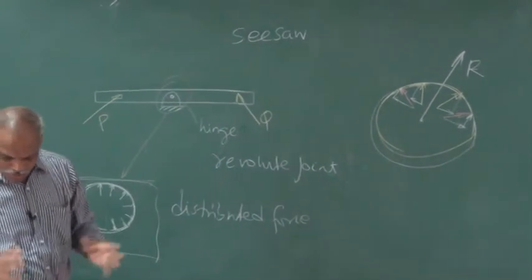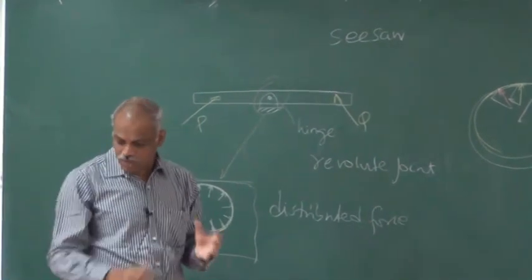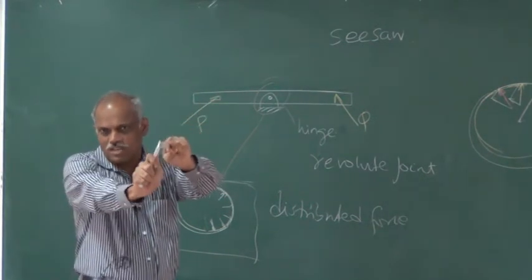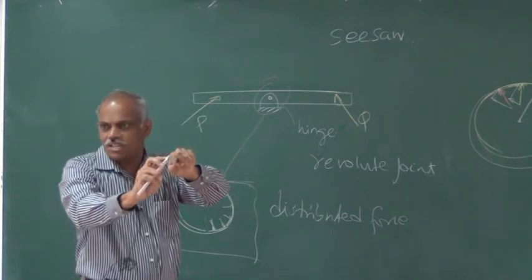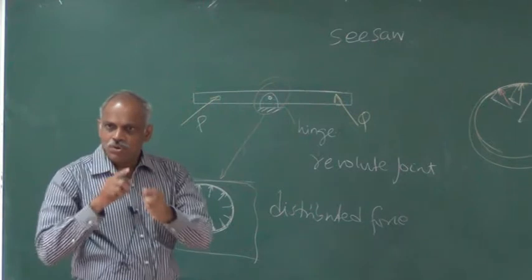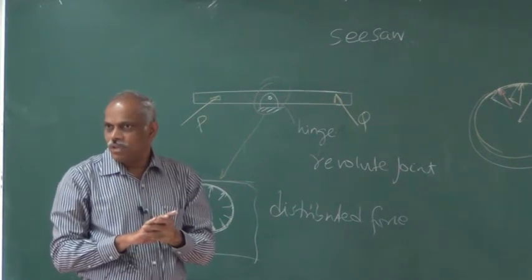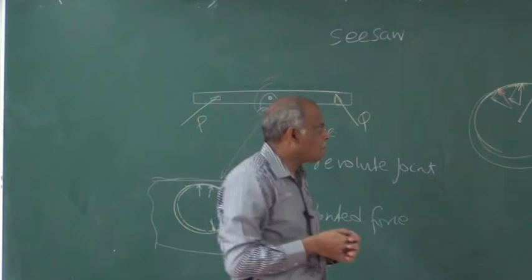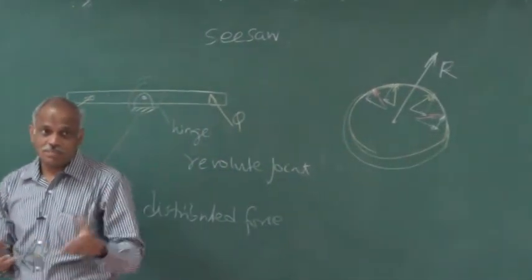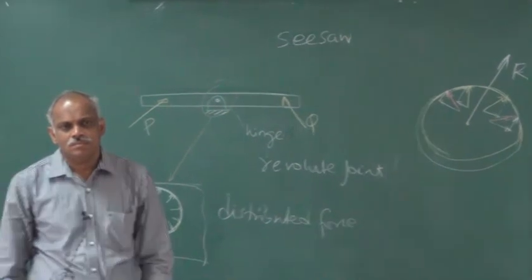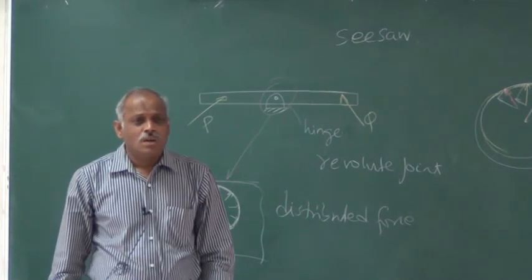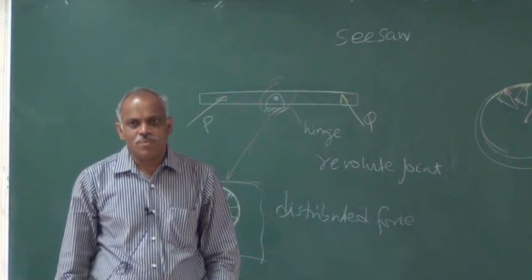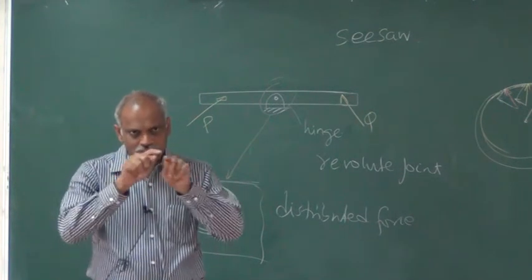This is the understanding we should develop for a revolute joint: it develops a force in a particular direction passing through the center of the pin. A student asks whether two circles have only one point of contact. Geometrically, with a clearance, you could say it is a point contact if the bodies are perfectly rigid, but in reality contact occurs over an area.